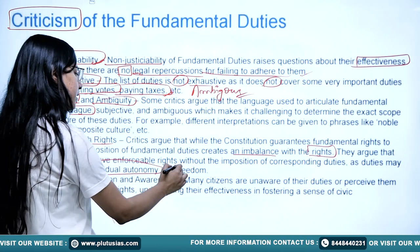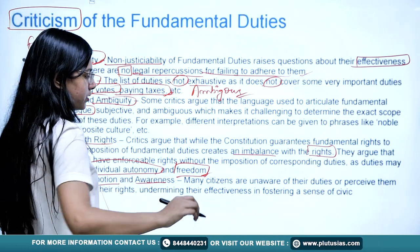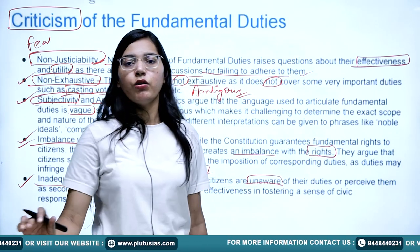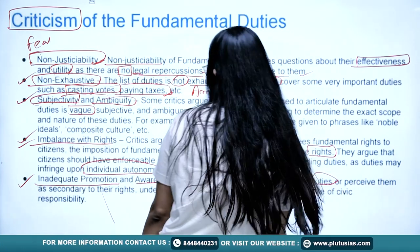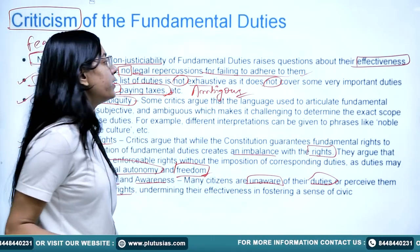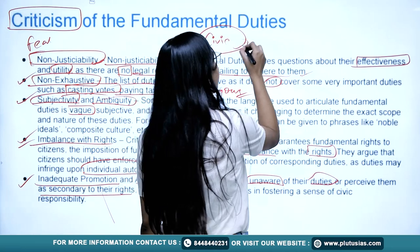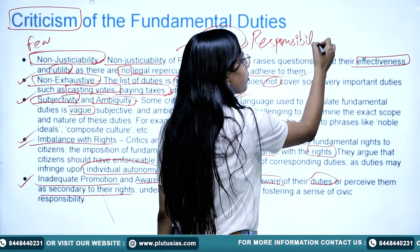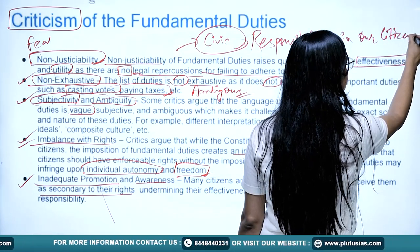Critics argue that citizens should have enforceable rights without corresponding duties, as duties may infringe upon individual autonomy and freedom. The fifth criticism is inadequate promotion and awareness — many citizens are unaware of their fundamental duties, and perceive them as secondary to their rights, undermining their effectiveness in fostering civic responsibility.